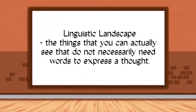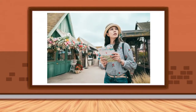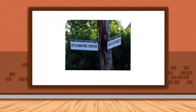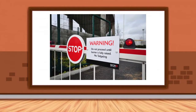Linguistic landscape refers to the things that you can actually see that do not necessarily need words to express a thought. When you find yourself lost in an unfamiliar place, you would first look around for signs that may tell you where you are — street names, billboards, signage, or even bills posted on walls and posts. Those signs help you familiarize yourself with the surroundings.